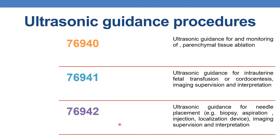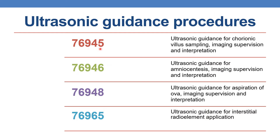Next is 76942, which deals with ultrasonic guidance for needle placement — for example, biopsy, aspiration, injection, and localization of device — including imaging, supervision, and interpretation. CPT 76945 deals with ultrasonic guidance for chorionic villus sampling, imaging, supervision, and interpretation. CPT 76946 deals with ultrasonic guidance for amniocentesis, imaging, supervision, and interpretation. CPT 76948 deals with ultrasonic guidance for aspiration of ova, imaging, supervision, and interpretation. Finally, 76965 deals with ultrasonic guidance for interstitial radio element application.